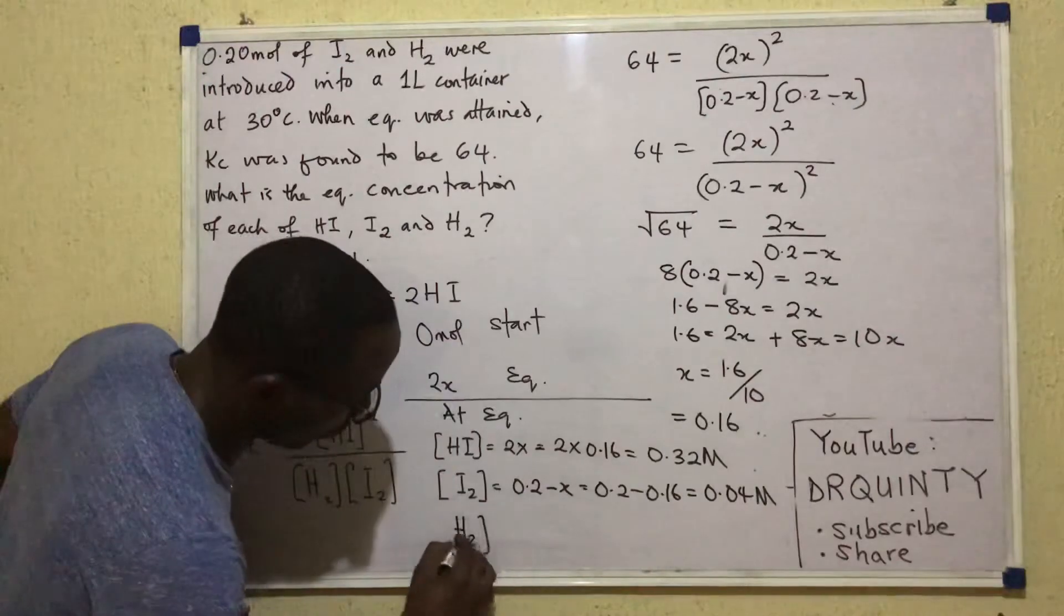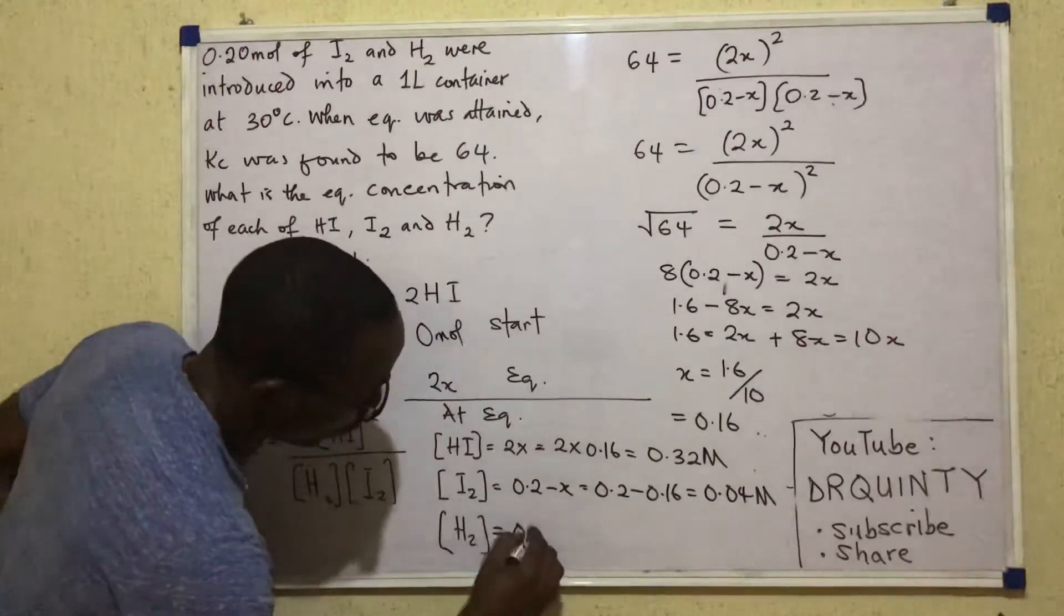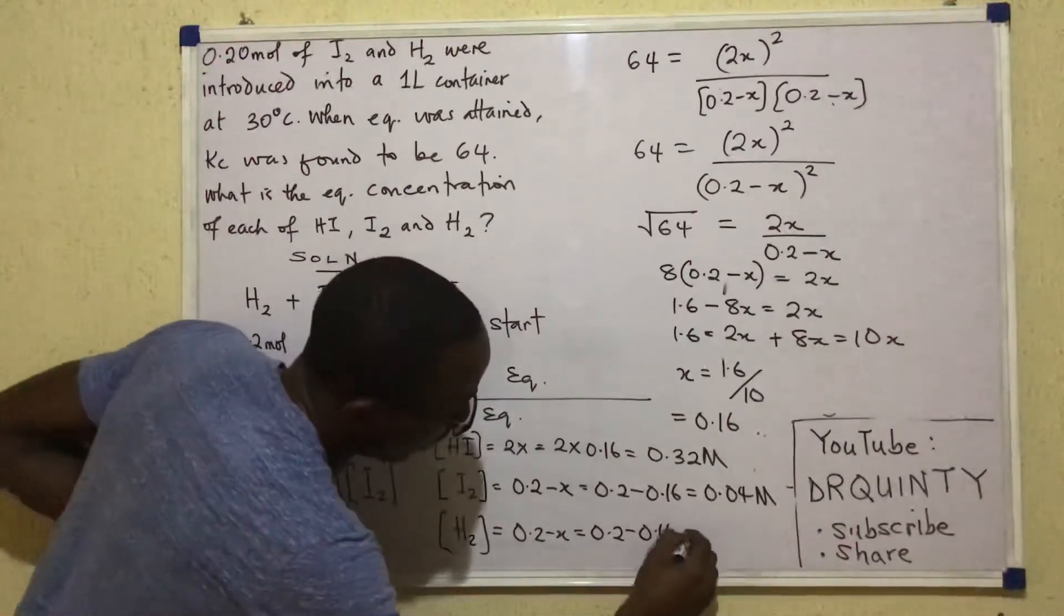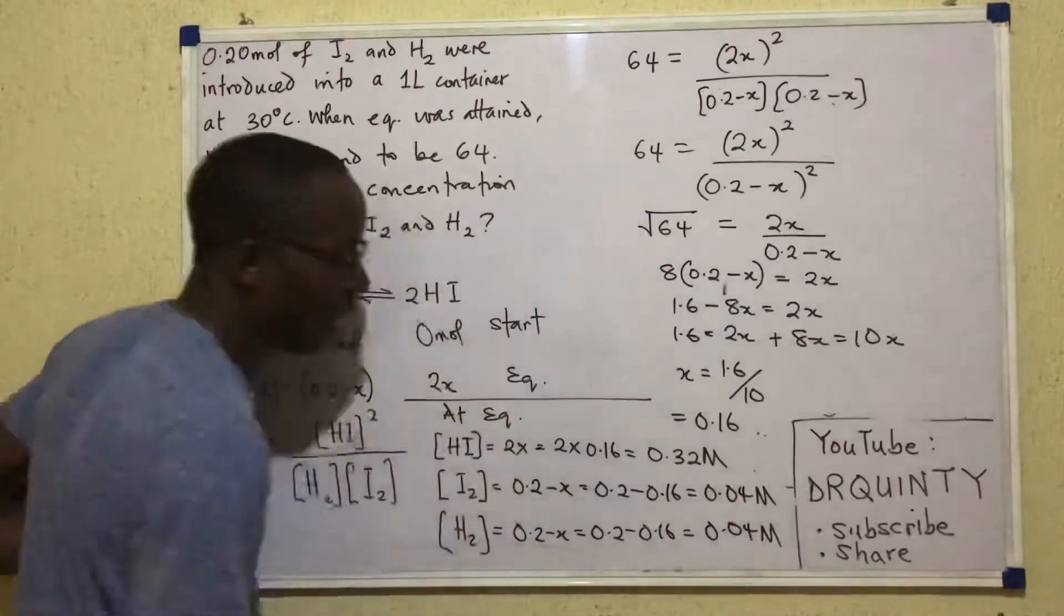And finally, for H2, its concentration will be 0.2 minus X which is 0.2 minus 0.16 and that is 0.04 moles per dm cube.